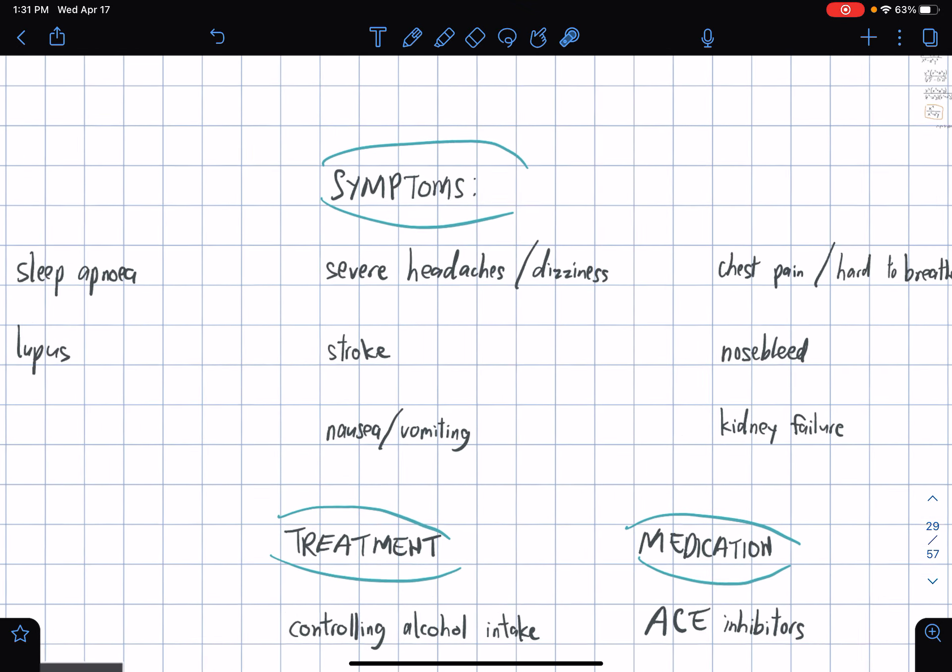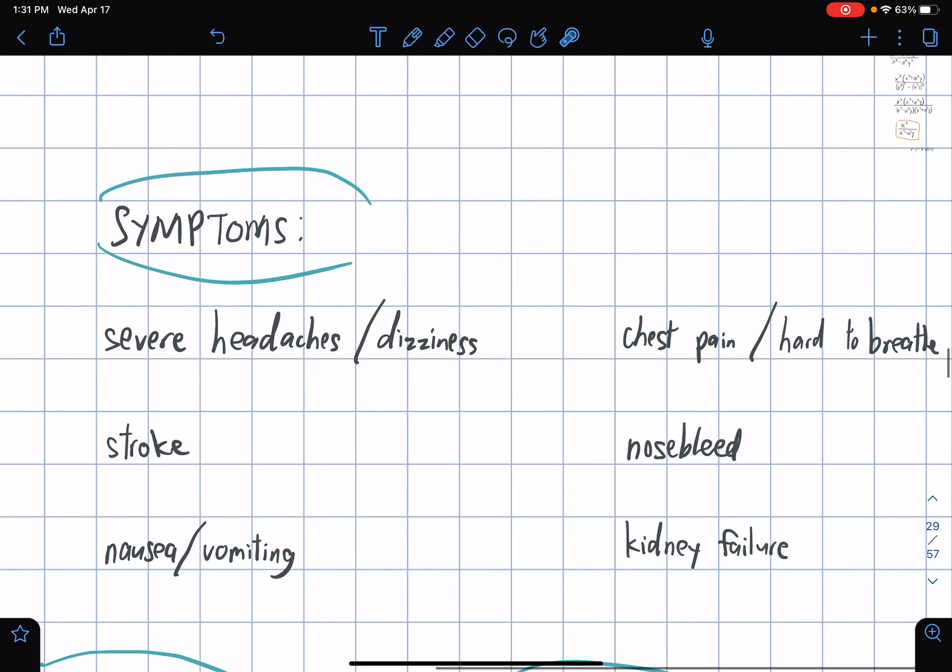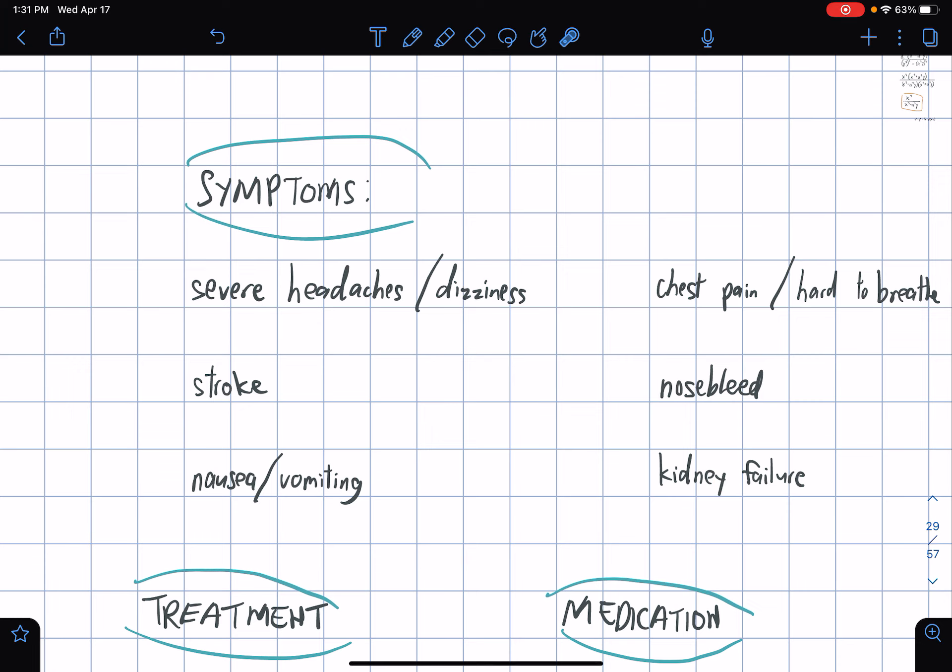What are the complications for high blood pressure? We have kidney disease or infection, diabetes, sleep apnea, and lupus - an autoimmune disorder where your own immune system is attacking your body. For symptoms, we have severe headaches or dizziness, stroke, nausea or vomiting, chest pain, it's hard to breathe, nosebleed, and kidney failure.